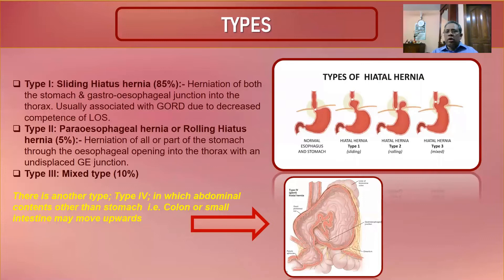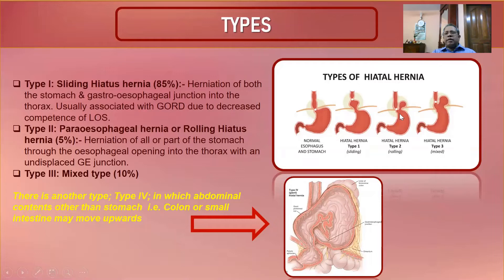There are three types of hiatus hernia. Type 1 (sliding hernia): the esophagus and gastroesophageal junction slide upward. Type 2 (rolling or para-esophageal hernia): the gastroesophageal junction remains in normal position but the fundus rolls through the hiatus. Type 3 (mixed): both types present simultaneously. Sliding is most common at 85%; para-esophageal is 5%; mixed is 10%.